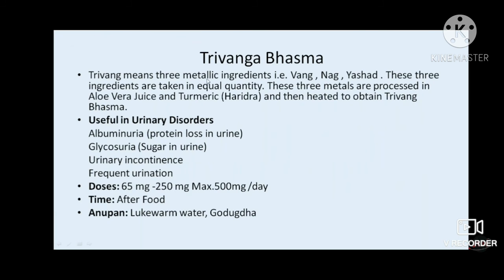Trivanga Bhasma is the best klethangha dravya. Considering kleda, Trivanga Bhasma can be used to reduce albuminuria, glycosuria, and urinary incontinence. It contains vanga, naga, and kansya in equal quantities, processed in aloe vera juice and turmeric to form Trivanga Bhasma. It is given in a dose of 65 to 500 mg after food with butter.